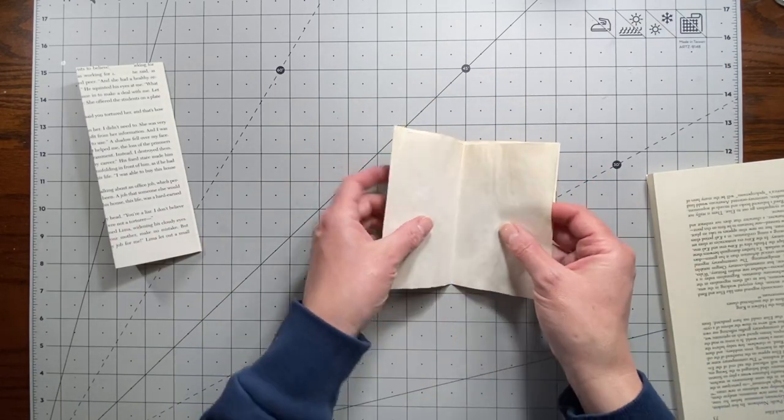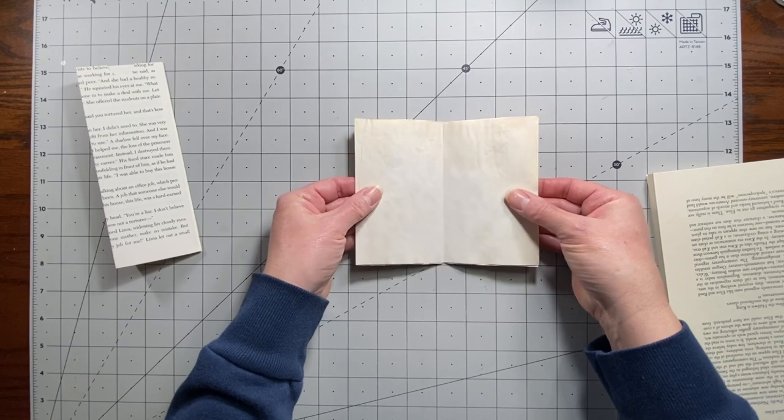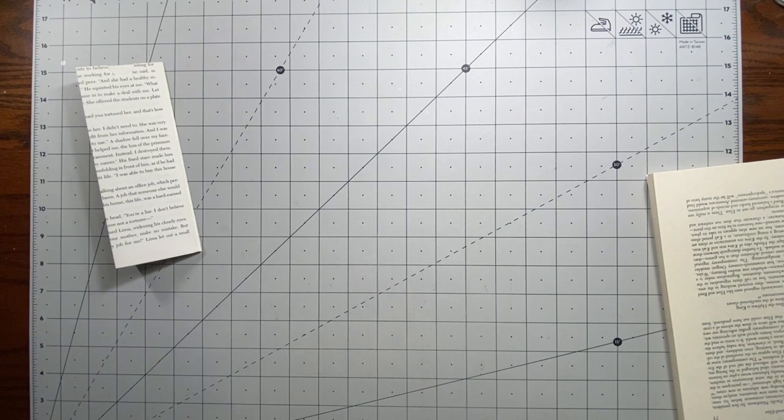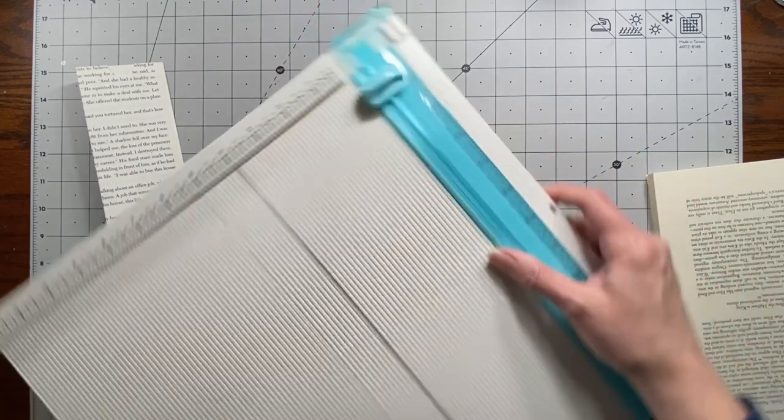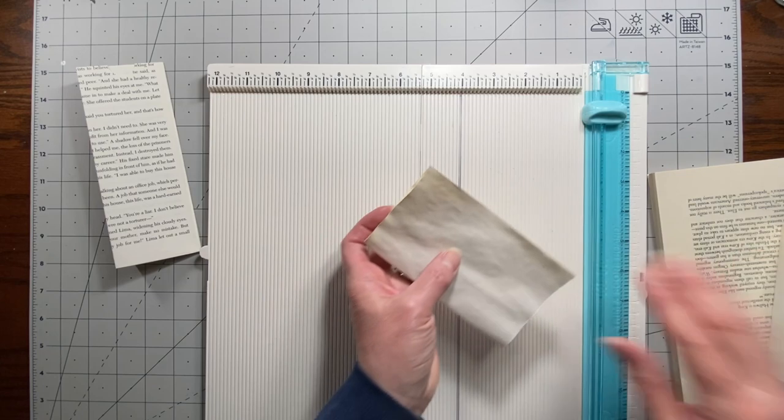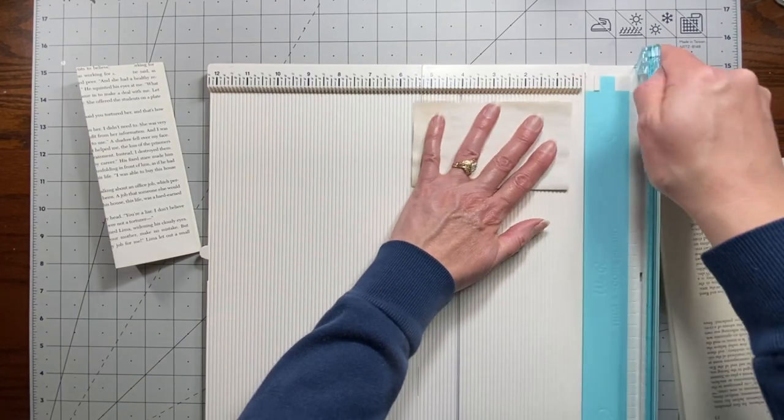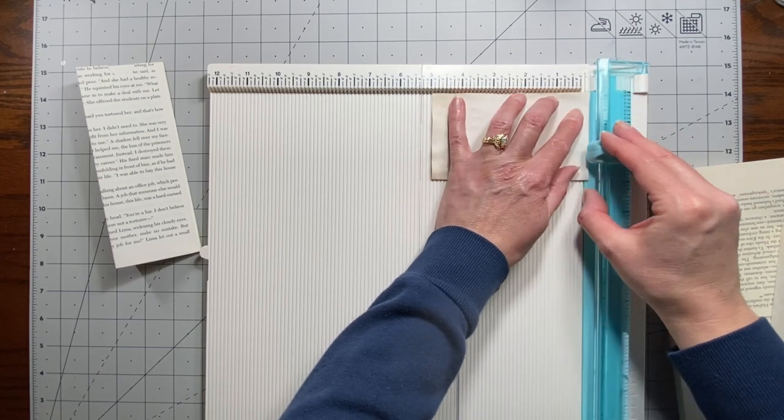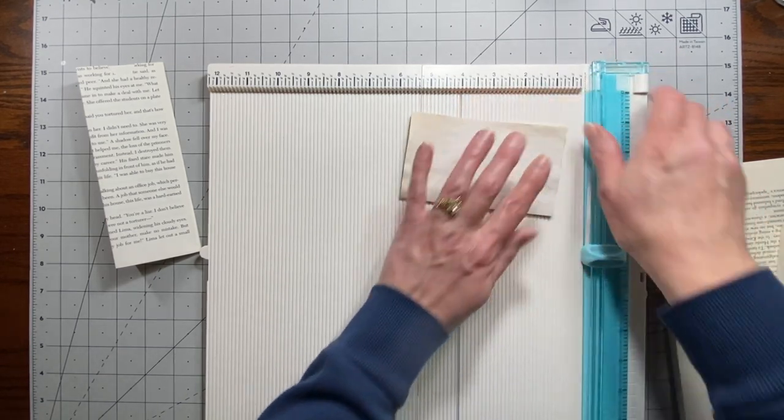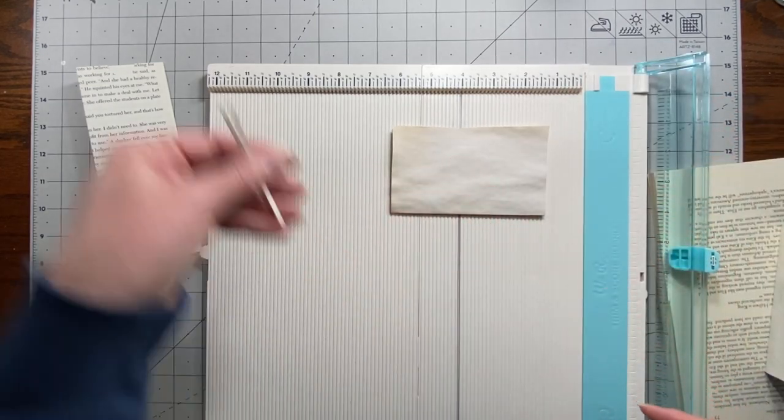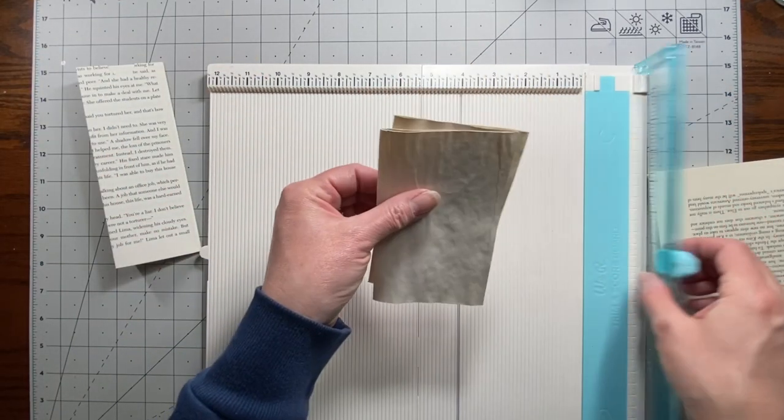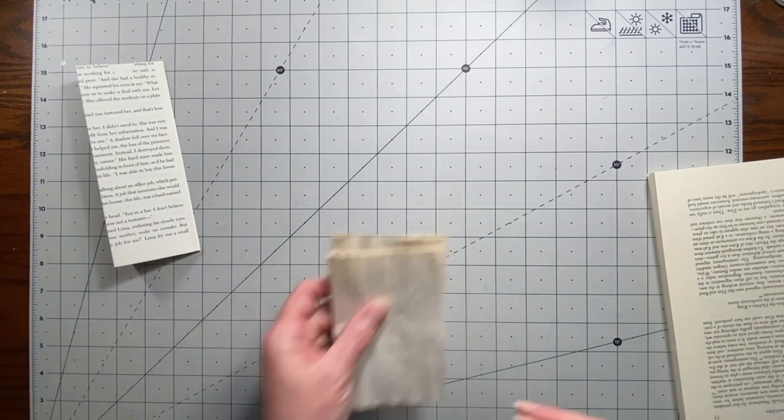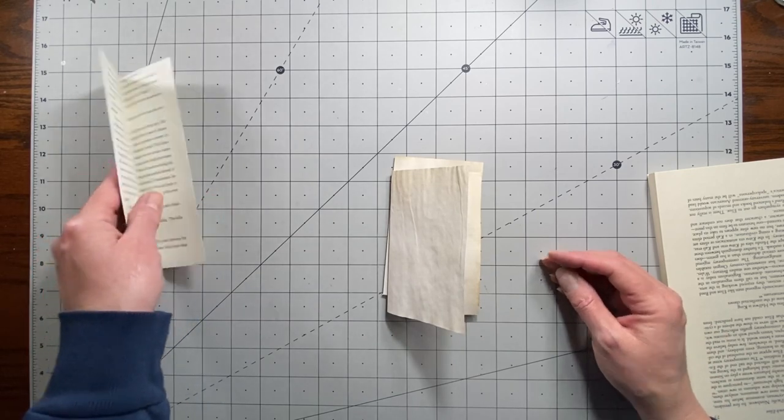So essentially you're going to take and glue the two sheets of paper, one inside of the other. I thought I was going to need my score board, but then because I was originally going to use cardstock and I decided that might get thick after adding all the pages.